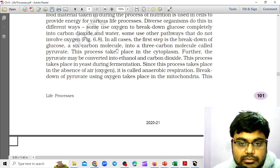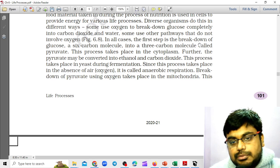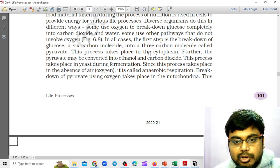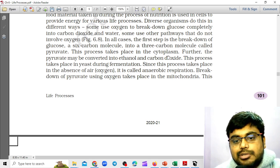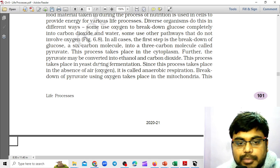In all cases, the first step is the breakdown of glucose, the six-carbon molecule, into a three-carbon molecule called pyruvate. This process takes place in the cytoplasm. Further, the pyruvate may be converted into ethanol and carbon dioxide.